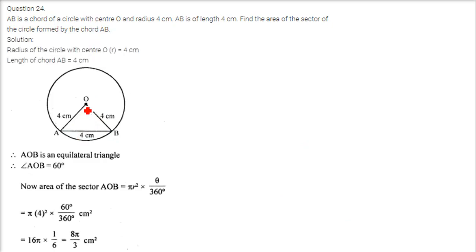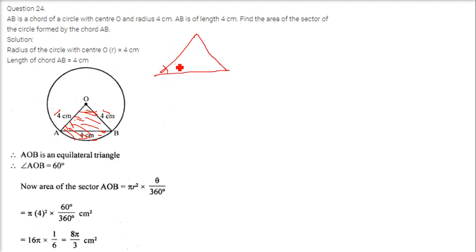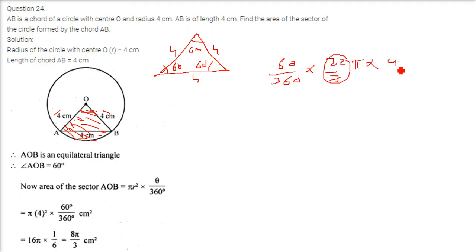AB is a chord of a circle with center O and radius 4 cm. AB is also of length 4 cm. So all sides of triangle OAB are equal, meaning it is an equilateral triangle. Find the area of the sector formed by chord AB. Since it is equilateral, all angles are 60 degrees. Area is 60 by 360 into pi r squared, which is 22 by 7 into 4 into 4. Simplifying gives 8 pi by 3 centimeter square.